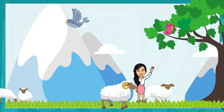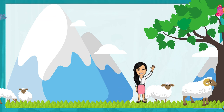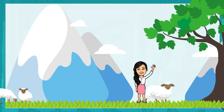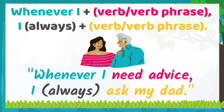Today, let's learn how to make sentences using 'whenever' in Myanmar, to convey the meaning that every time something happens, there's a predictable consequence. An example would be a sentence like: whenever I need advice, I always ask my dad. The 'always' part is implied in this type of sentence.